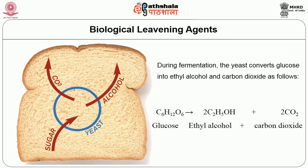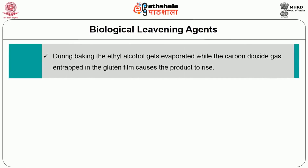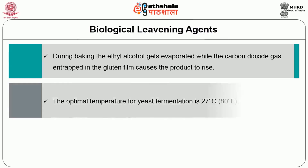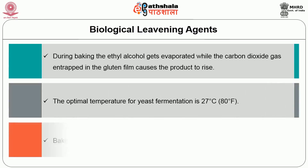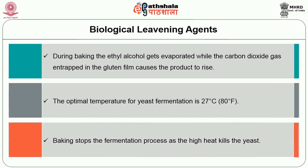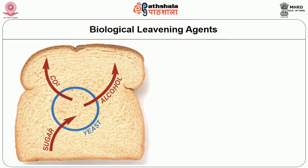During fermentation, yeast converts glucose into ethyl alcohol and carbon dioxide as shown in the picture. During baking, the ethyl alcohol gets evaporated while the carbon dioxide gas is entrapped in the gluten film, causing the product to rise. The optimal temperature for yeast fermentation is 27°C. Baking stops the fermentation process as the high heat kills the yeast.